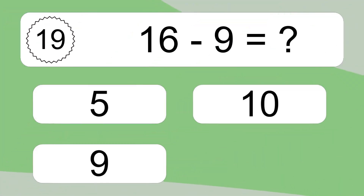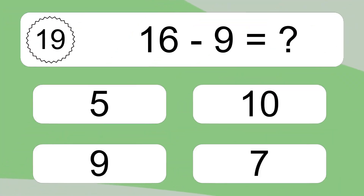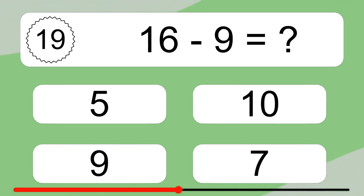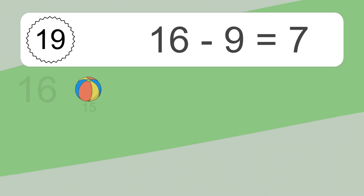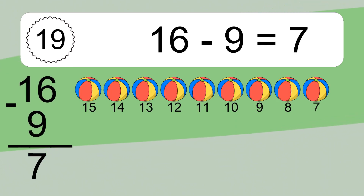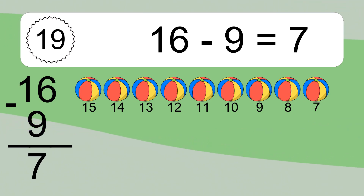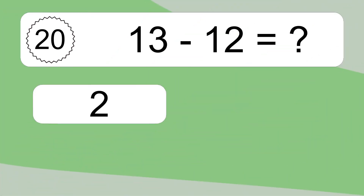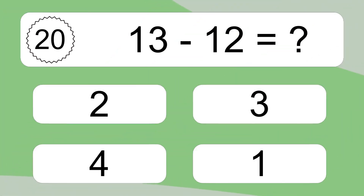16 minus 9 equals what? 16 minus 9 equals 7. Let's count it. 15, 14, 13, 12, 11, 10, 9, 8, 7.